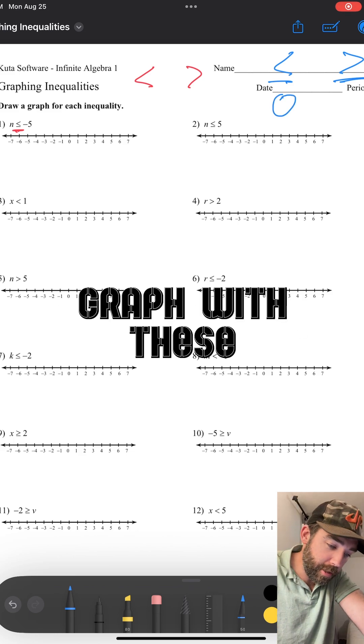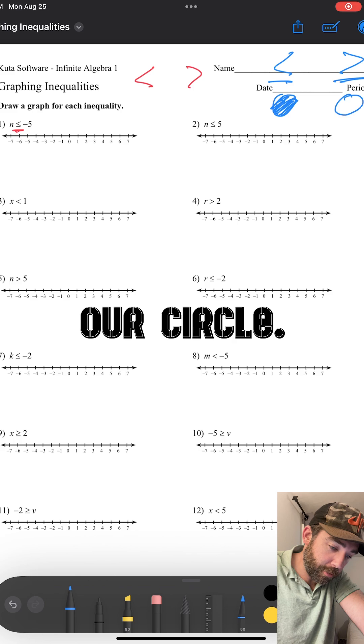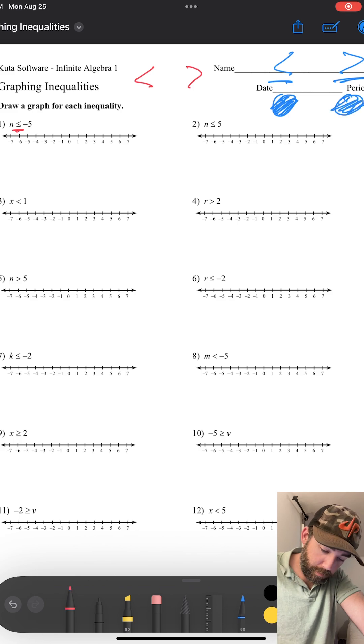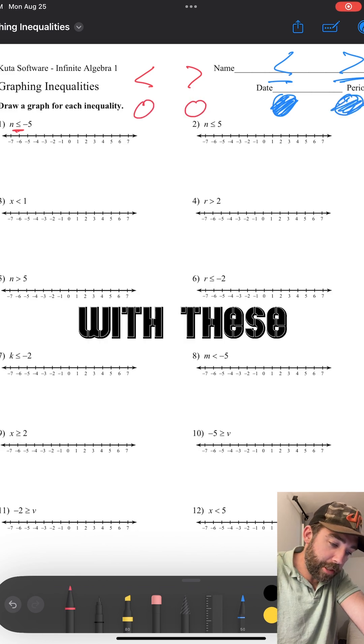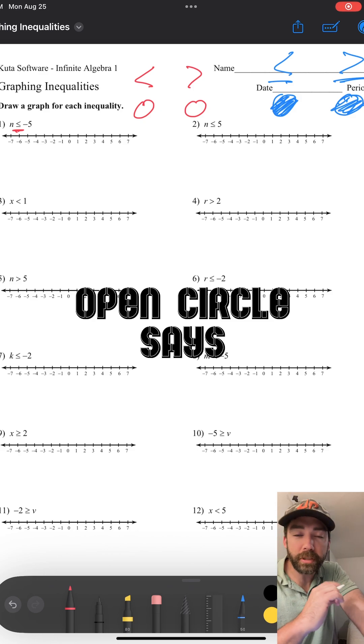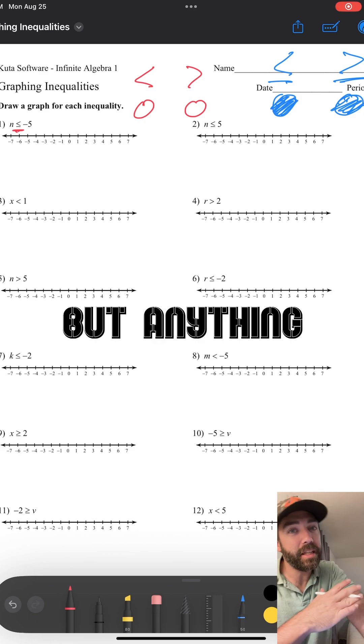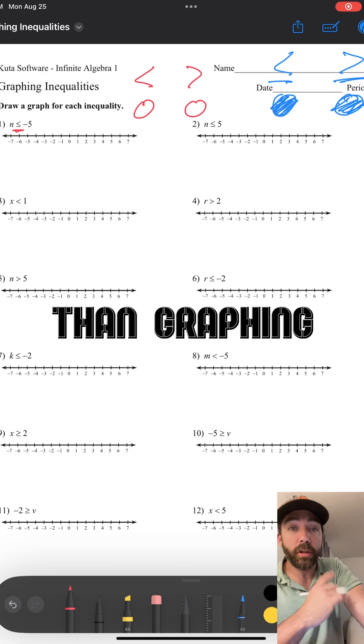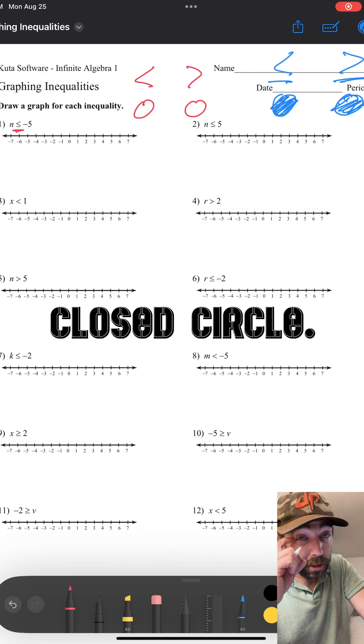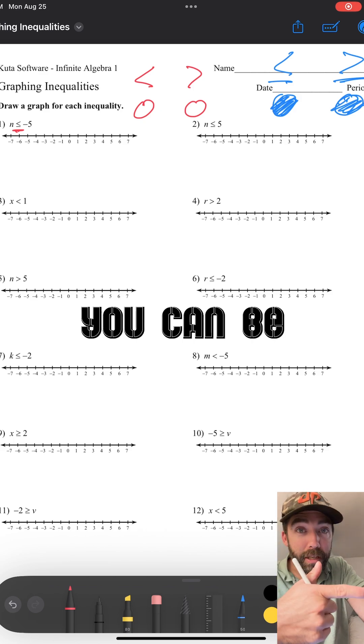So when we graph with these, we are filling in our circle like so. When we graph with these, we keep an open circle. Open circle says we can't be this, but anything greater than or less than. Graphing with a closed circle, you can be this guy.